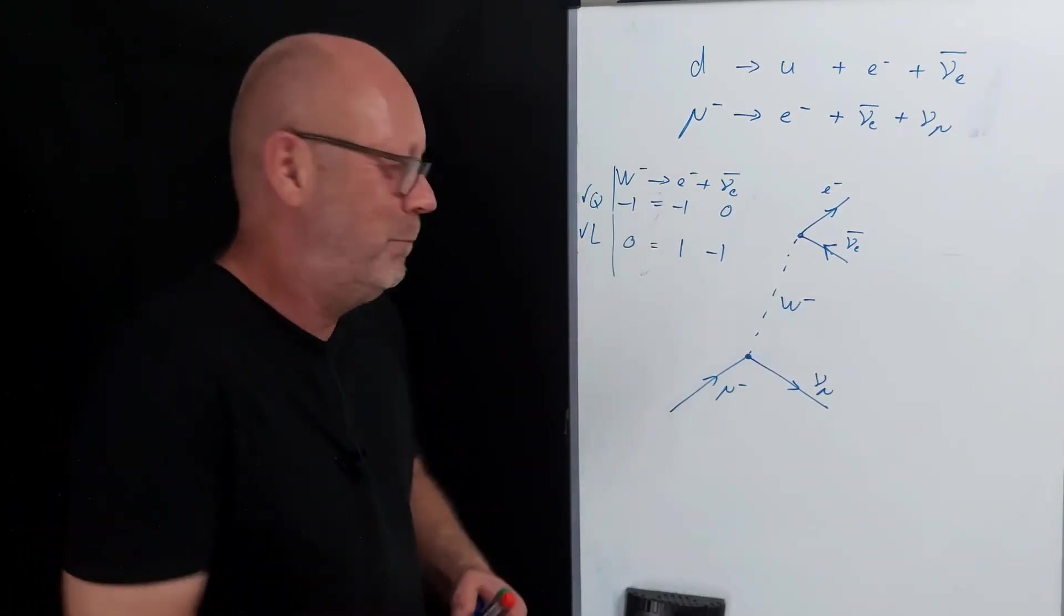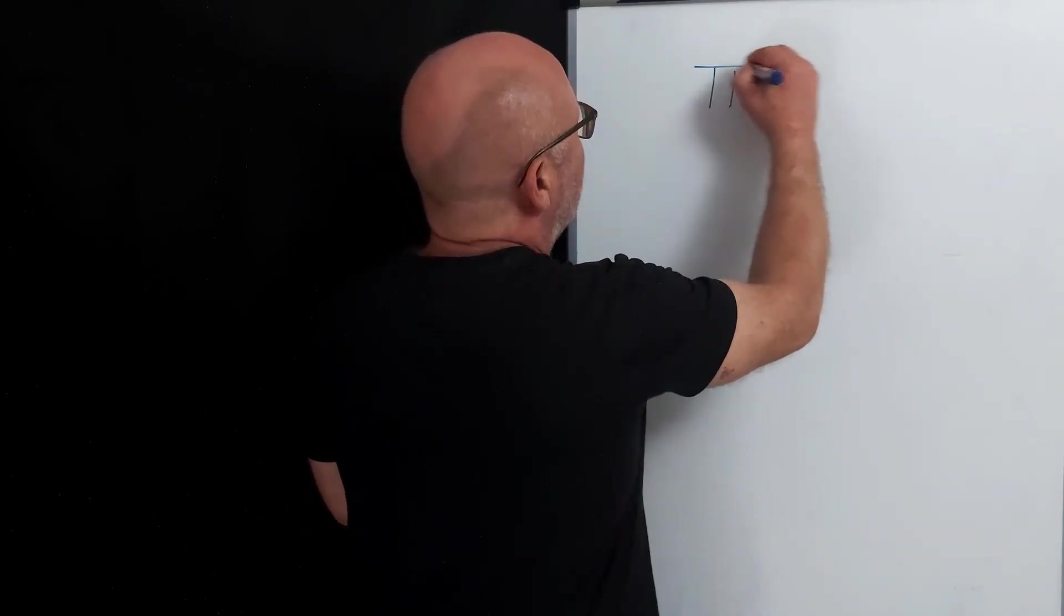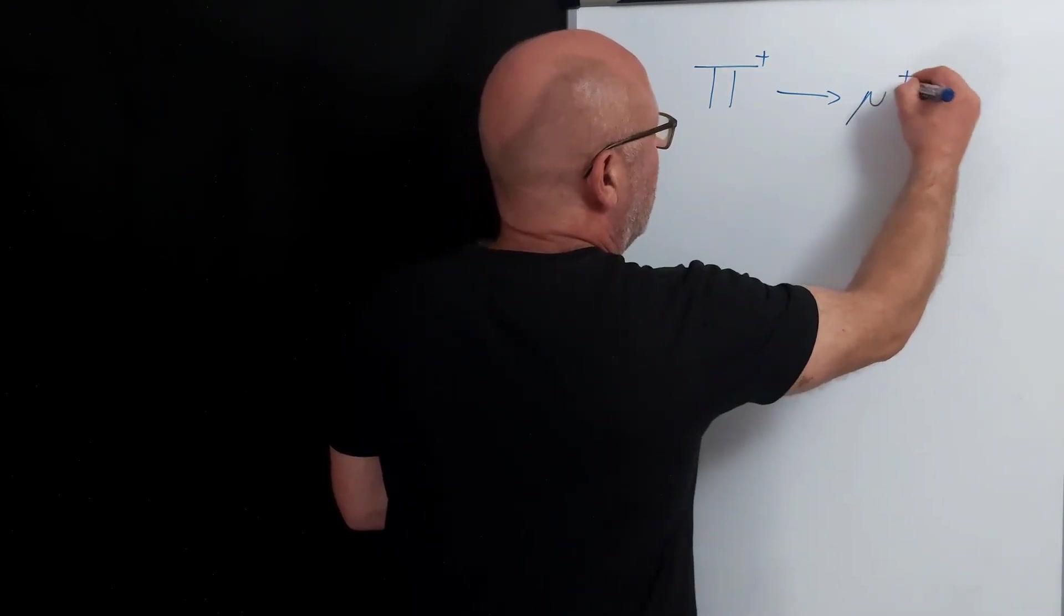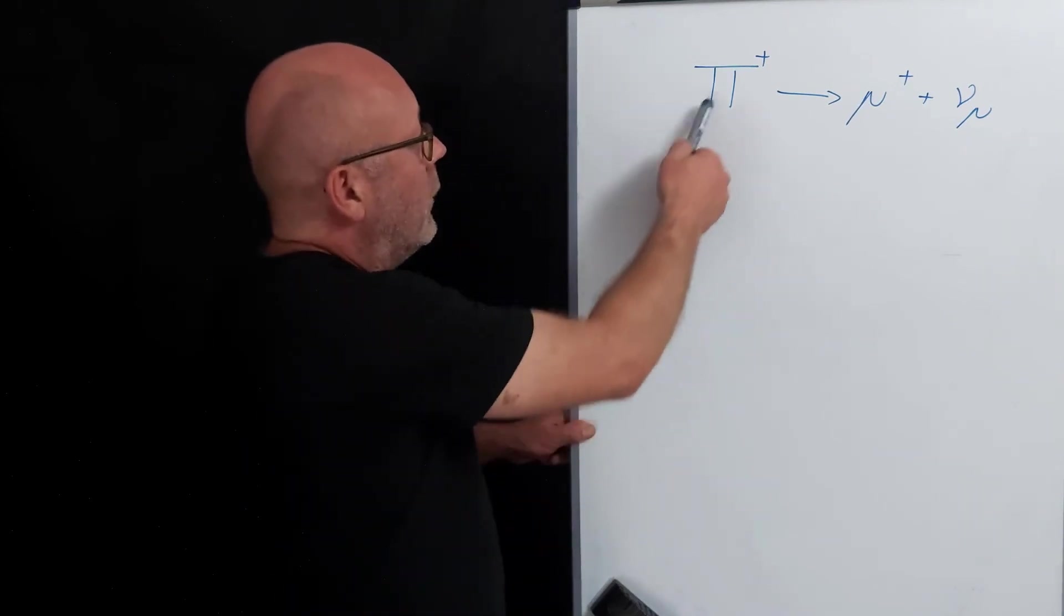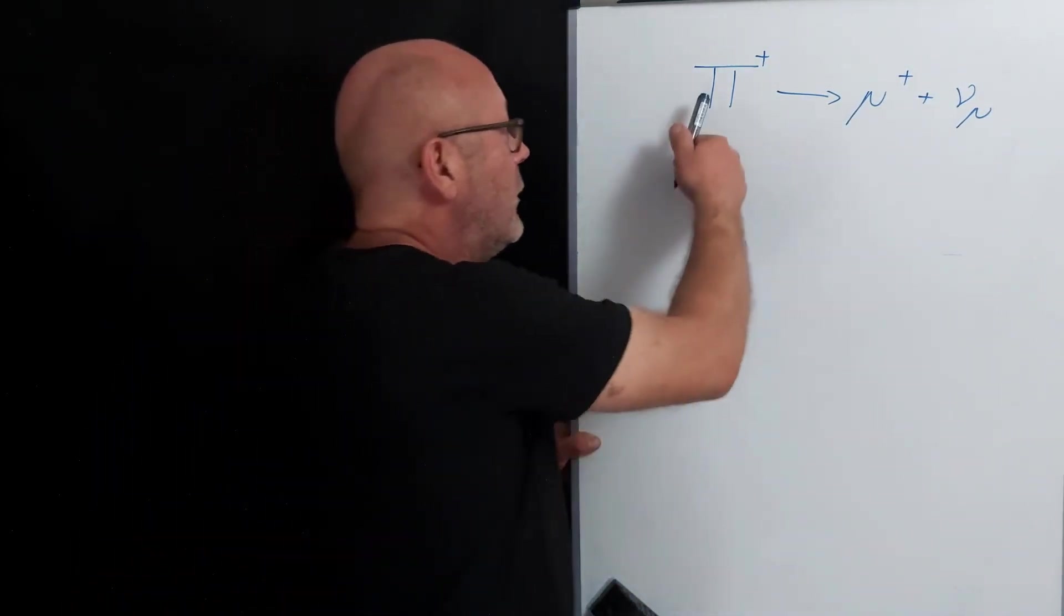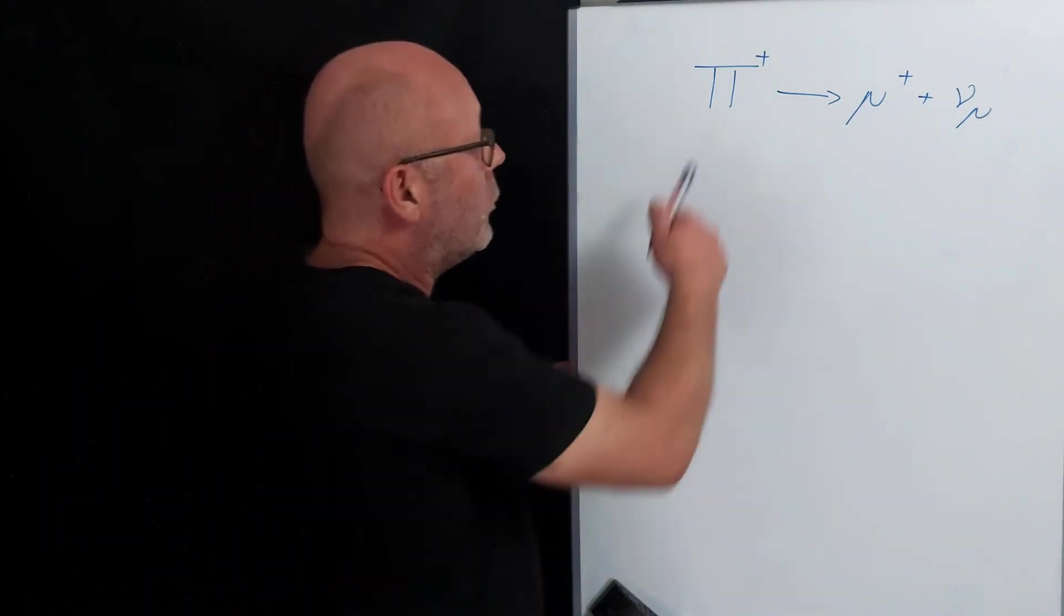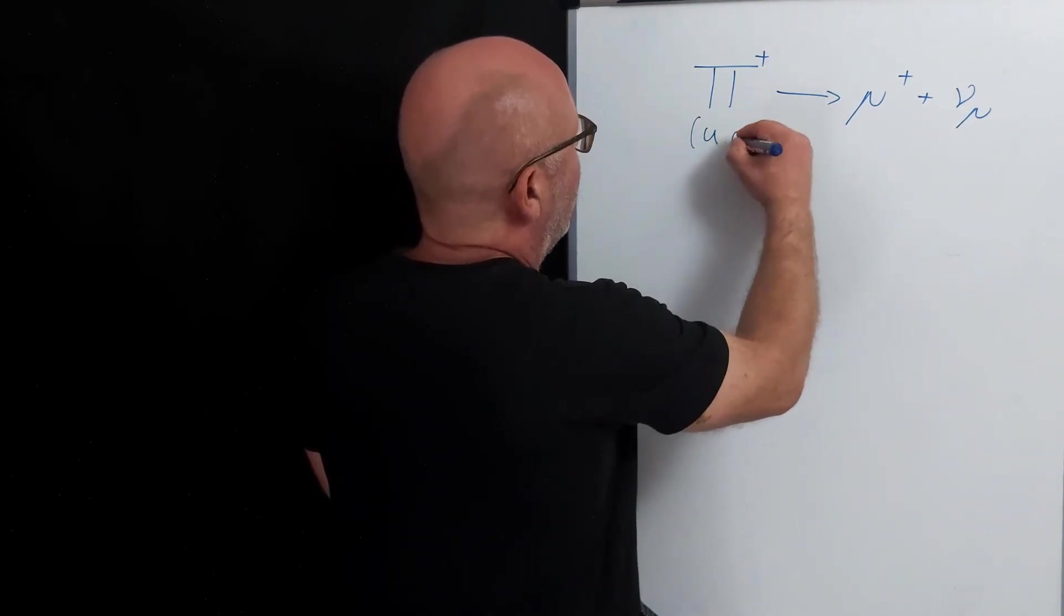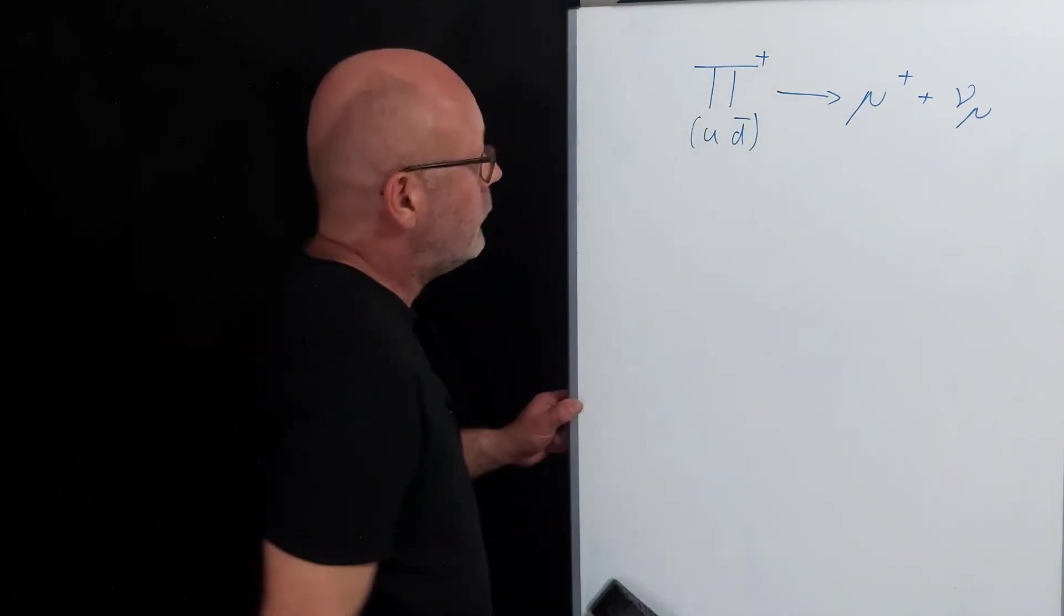Let's do another one. Let's consider a positive pion that transforms into an anti-muon and a muonic neutrino. A pion is a meson, so it's made of a quark and an anti-quark. And a pion is made of a combination of up and down flavors. So in order to have a pion with a plus one charge, it would be an up and an anti-down. Two thirds plus one third gives you plus one.